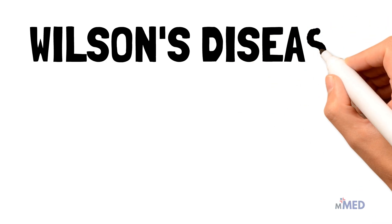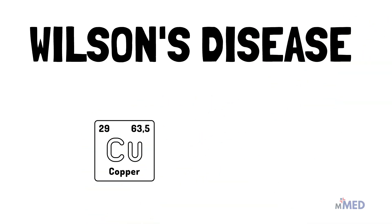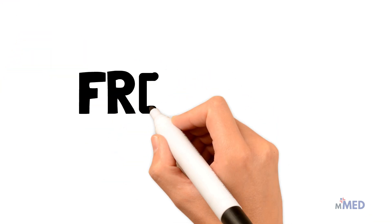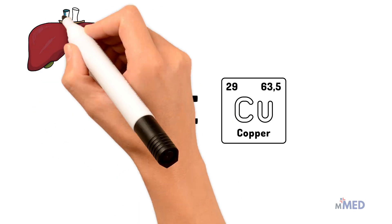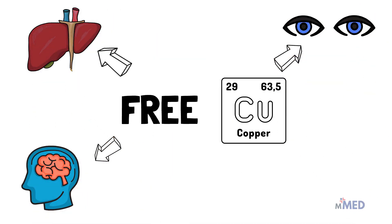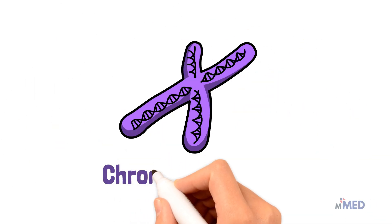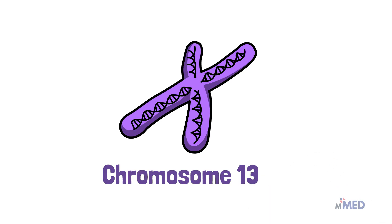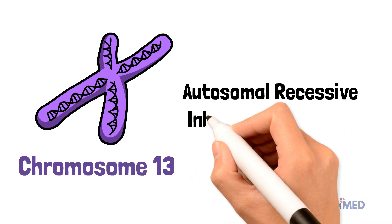Welcome back to Minute Med. In this video we are going to talk about Wilson's disease. Wilson's disease is the excessive accumulation of free copper in the body tissues such as the liver, the brain, cornea, and joints. It's caused by a mutation in the Wilson's disease protein, which is on chromosome 13. Wilson's disease has an autosomal recessive inheritance pattern.